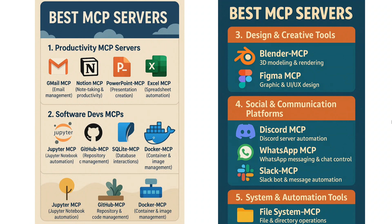Social media and communication platforms — this is very important because for content creators like me, we need to manage multiple channels. Discord MCP helps you manage your Discord server via a bot controlled by AI from your system, so if you ask the AI to publish a message in a certain channel, it will do it for you. WhatsApp MCP is on fire — you can message anyone, read anyone's messages, and summarize all the text from the last week.